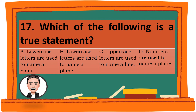Question 17. Which of the following is a true statement? A. Lowercase letters are used to name a point. B. Lowercase letters are used to name a plane. C. Uppercase letters are used to name a line. D. Numbers are used to name a plane. The correct answer is C. Uppercase letters are used to name a line.